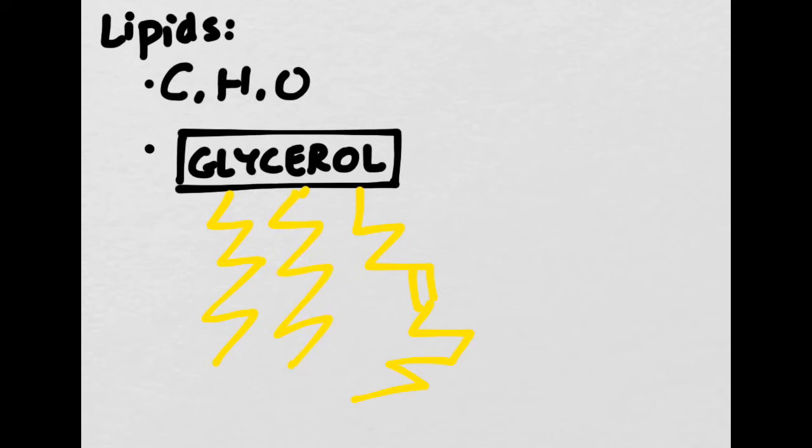Saturated fatty acid tails can hook up right next to one another like this and form very tightly knit groups. This is why butter, which is a saturated fat, is solid at room temperature. However, unsaturated fats, like this tail on the right, don't quite line up with the others. This is why fats, such as olive oil, are liquid at room temperature.